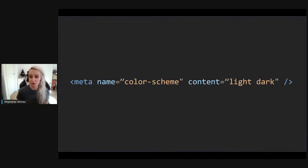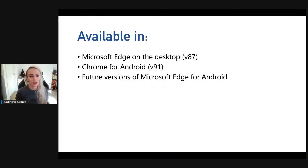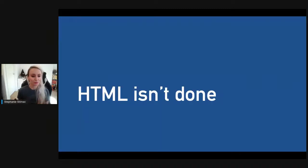To render all document form controls in dark mode, all you need is a meta tag declaration to let the browser know which color modes the website supports. The declaration tells the browser it's safe to render controls as light or dark. This is available in Microsoft Edge desktop version 87, Chrome for Android version 91, and future versions of Microsoft Edge for Android. More information is at aka.ms/dark-controls.